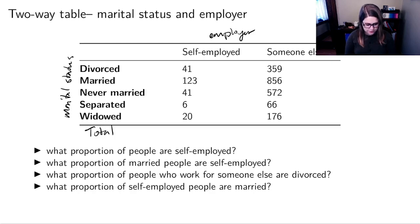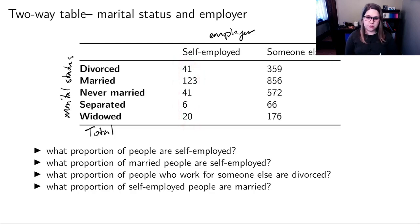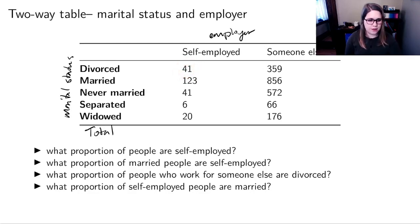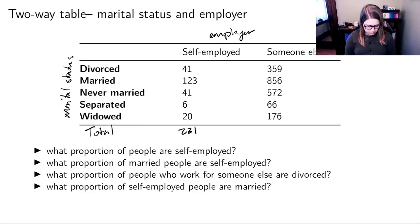We're going to need to figure out the total number of self-employed people. So 41 plus 123 plus 41, 6, and 20 — adding those all up, that should be 231.